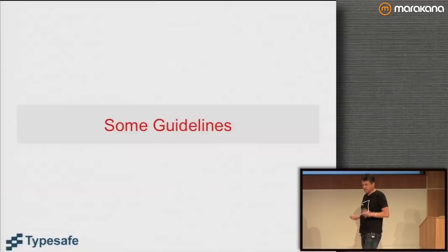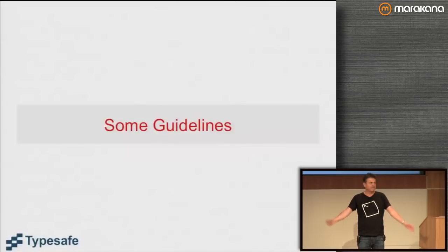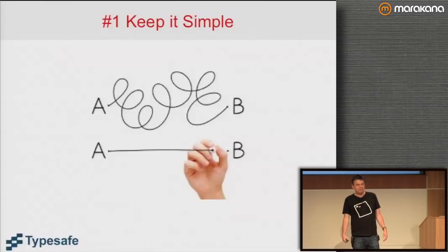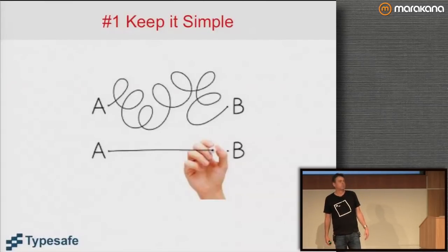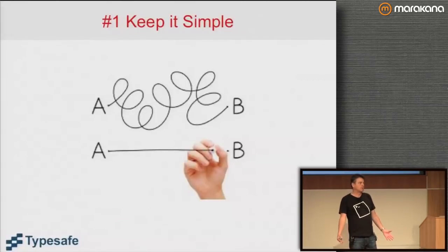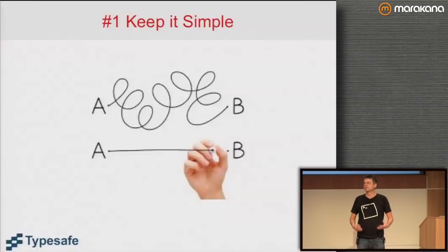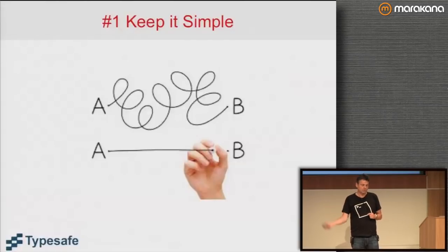I want to start with six guidelines that I believe help in writing good Scala programs. The first one I don't believe is controversial: keep it simple. Just because Scala is a language where you can master wonderfully tough problems and complex systems, it doesn't mean you need to bring all those mechanisms to bear. Pick the simplest thing that does the job, the simplest thing that goes from A to B without many contortions.